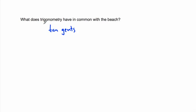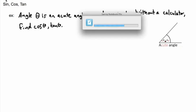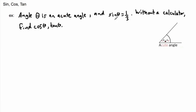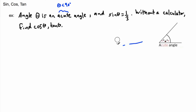Let's do an example. We have an angle theta that is an acute angle — acute means the angle is less than 90 degrees. If it's greater than 90 degrees we call it obtuse. In this case we have an acute angle, and we know that sine of theta is 1/3. The question says: without a calculator, find cosine of theta and find tan of theta.